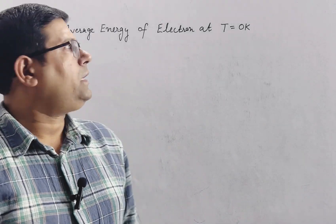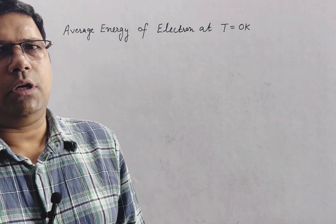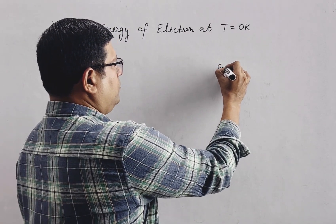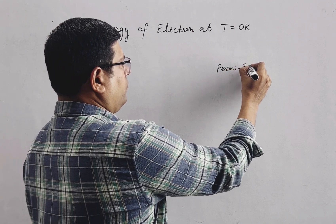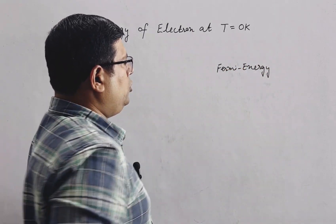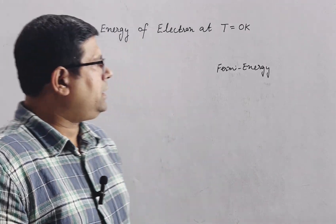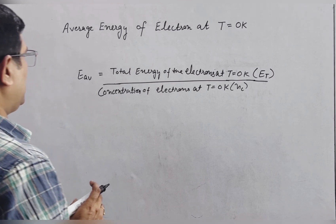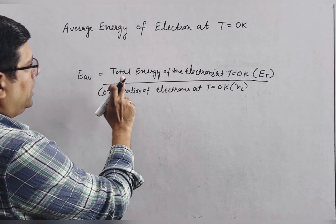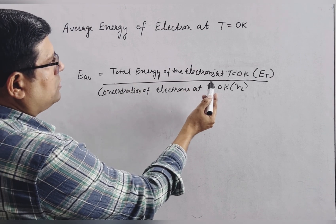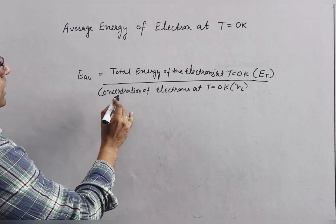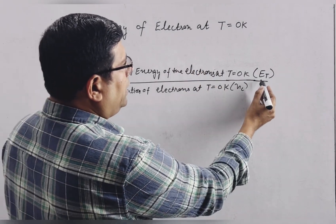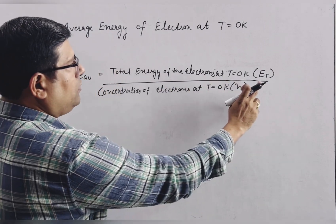The average energy of the electron at T equal to 0 Kelvin. This topic is an extension to our previous lecture on Fermi energy — you may go through that topic, I am giving the link in the description box. Now we will define the average energy of the electron at T equal to 0 Kelvin. It is defined as the ratio of total energy of the electrons at T equal to 0 Kelvin to the concentration of electrons at T equal to 0 Kelvin.